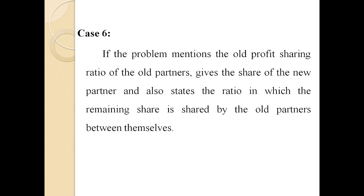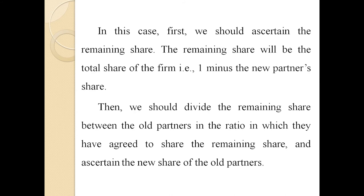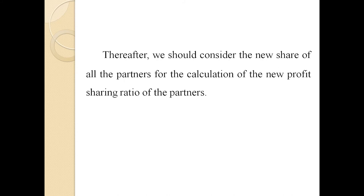Case number 6: if the problem mentions the old profit sharing ratio of the old partners, gives the share of the new partner, and also states the ratio in which the remaining share is shared by the old partners between themselves. In this case, first we ascertain the remaining share, which is 1 minus the new partner's share. Then we divide the remaining share between the old partners in the ratio they have agreed upon to ascertain their new shares. Thereafter, the new share of all partners is considered for the calculation of the new profit sharing ratio.